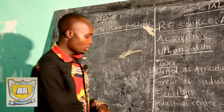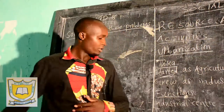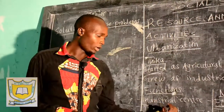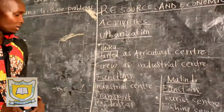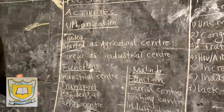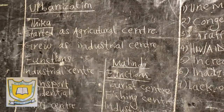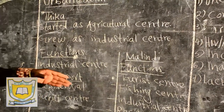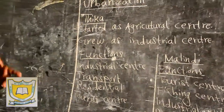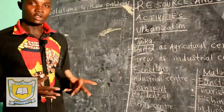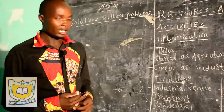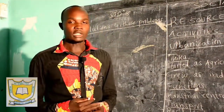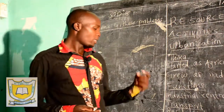Number two, Thika is a transport and communication center. We have very many roads connecting Thika from Nairobi to other parts of the country — that is what we mean by transport. Then in terms of communication, we have small radio stations found there, which make sure that people in the country know what is going on.